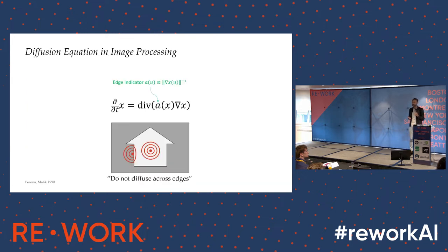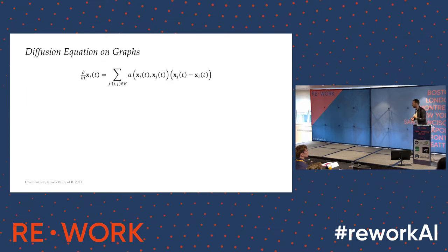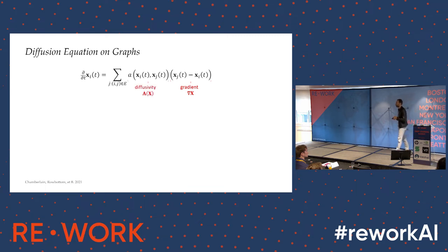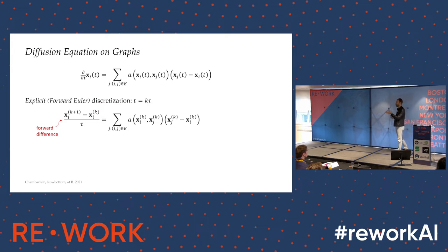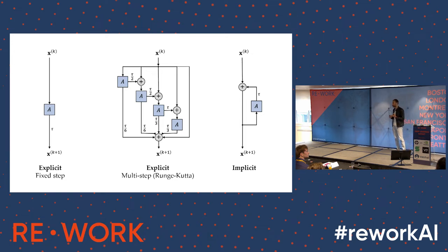This is very similar to the mechanism of attention on graphs. We can reproduce diffusion equations on graphs by replacing continuous derivatives with discrete derivatives. The gradient analogy is the difference between feature vectors at two endpoints; the diffusivity analogy is what we call the attention function; and the divergence is aggregating information from edges sharing a node. Discretizing time with fixed steps — the explicit or forward Euler scheme — gives us, interestingly, the graph attention network when normalized with unit step size. Graph attention networks are therefore a special discretization of this diffusion equation.